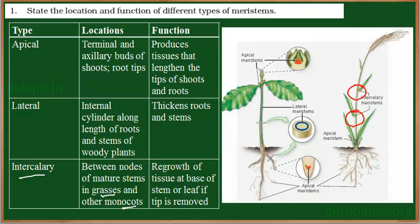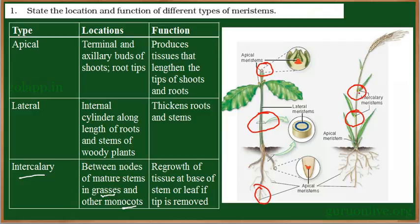In summary: apical meristems are found at the tip regions; lateral meristems are found only in dicots in the stem and root, between xylem and phloem, and are required for secondary growth; intercalary meristems are found majorly in grasses at the nodes and specifically at the base of the leaf, helping in regrowth of tissue when grazed by animals.